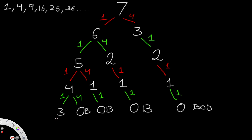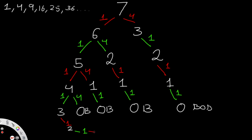Continuing down the tree, Alice has one option — play 1 — leading to two possibilities. Then it's Bob's turn (green), who removes 1, leaving 1 stone. Then Alice removes that last 1 stone, and Alice ends up winning at that leaf.